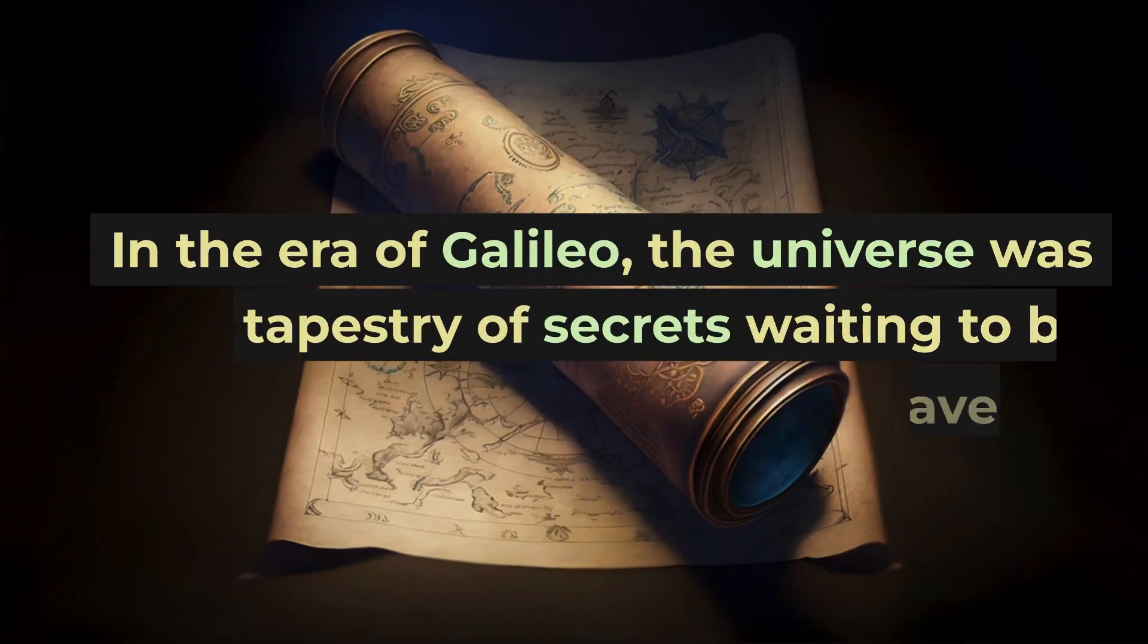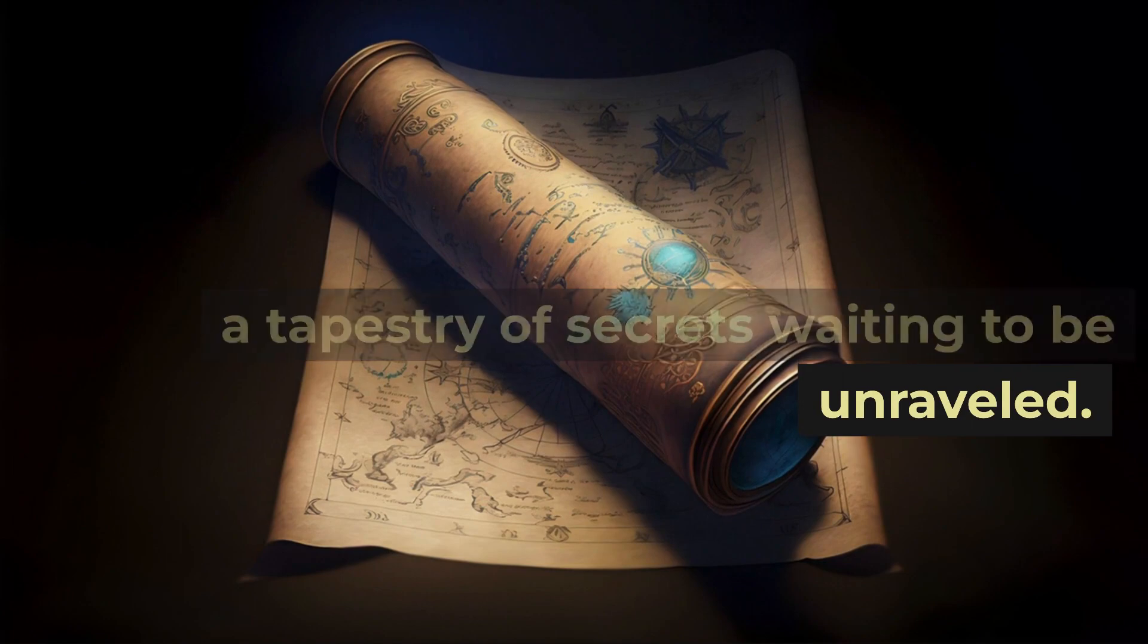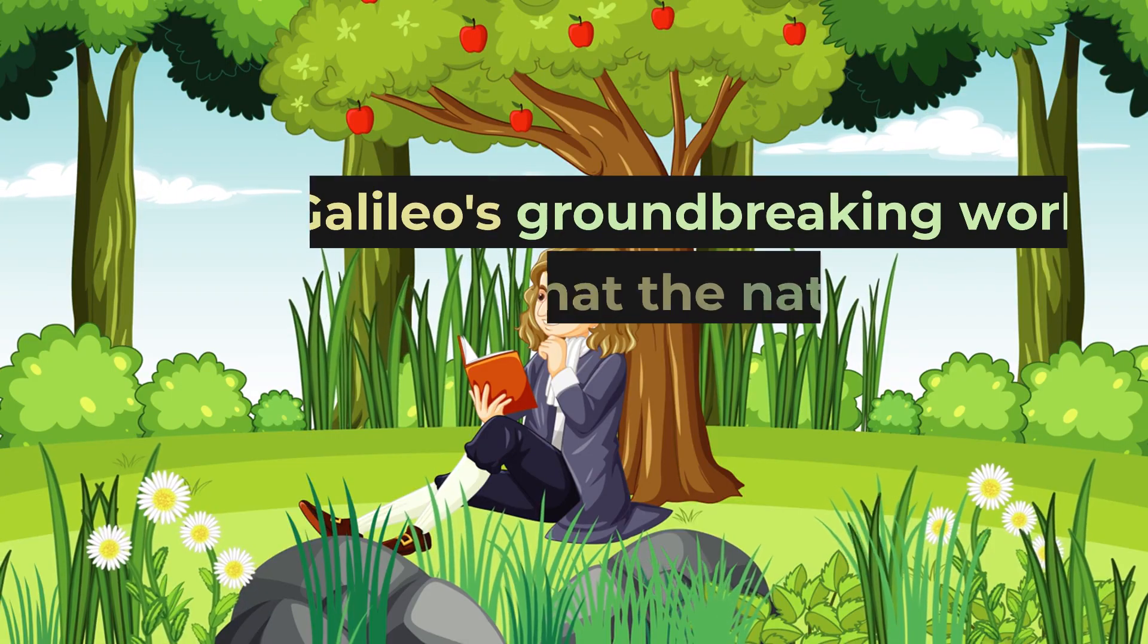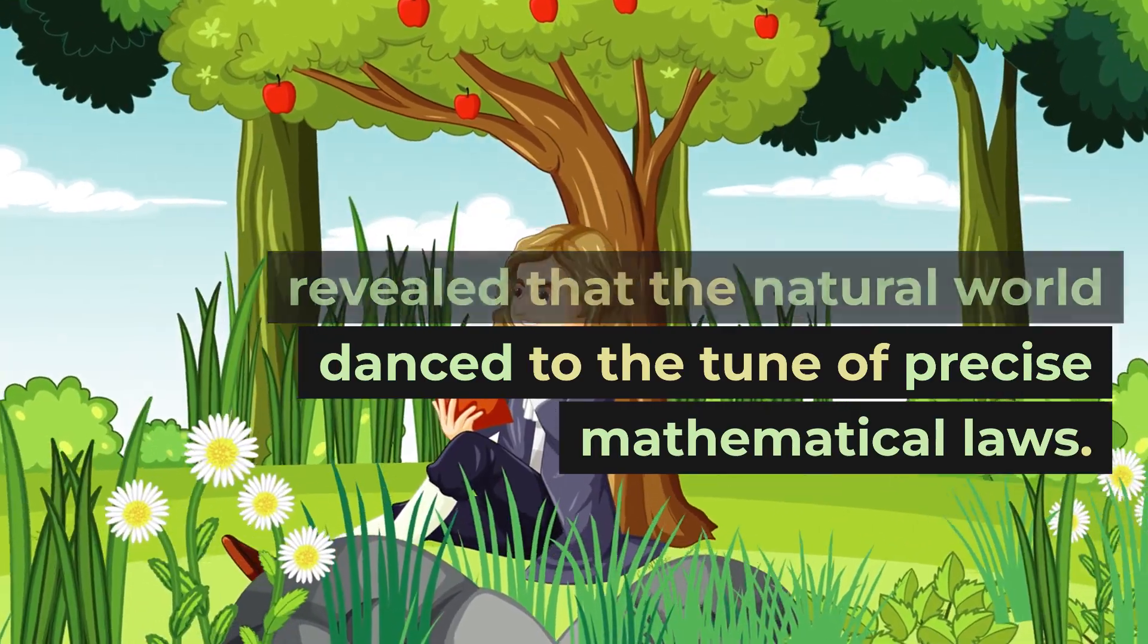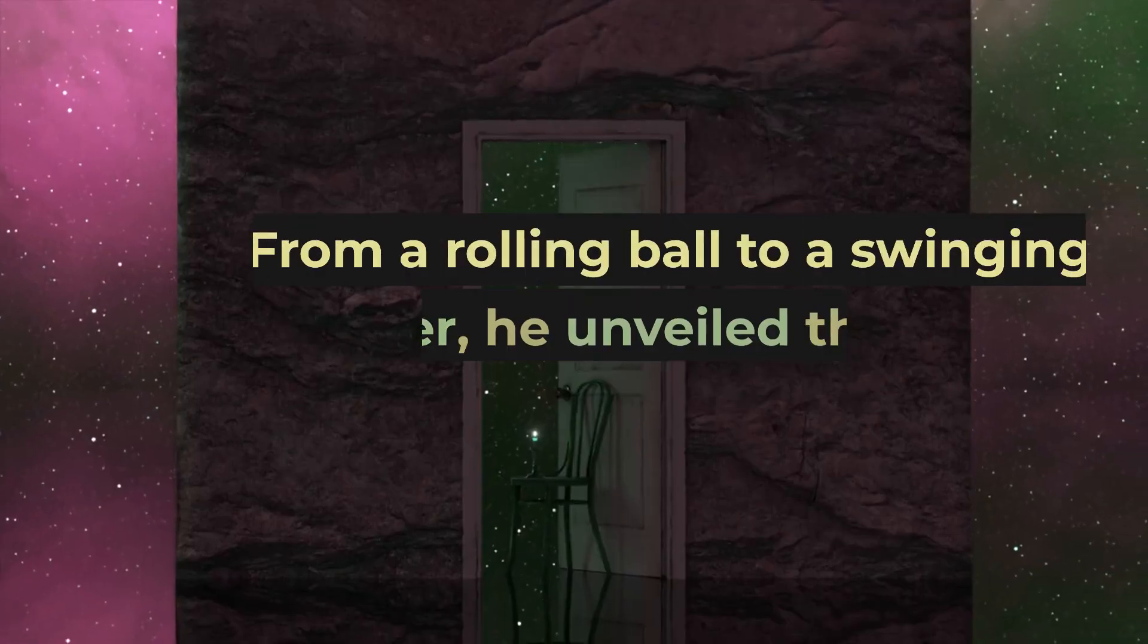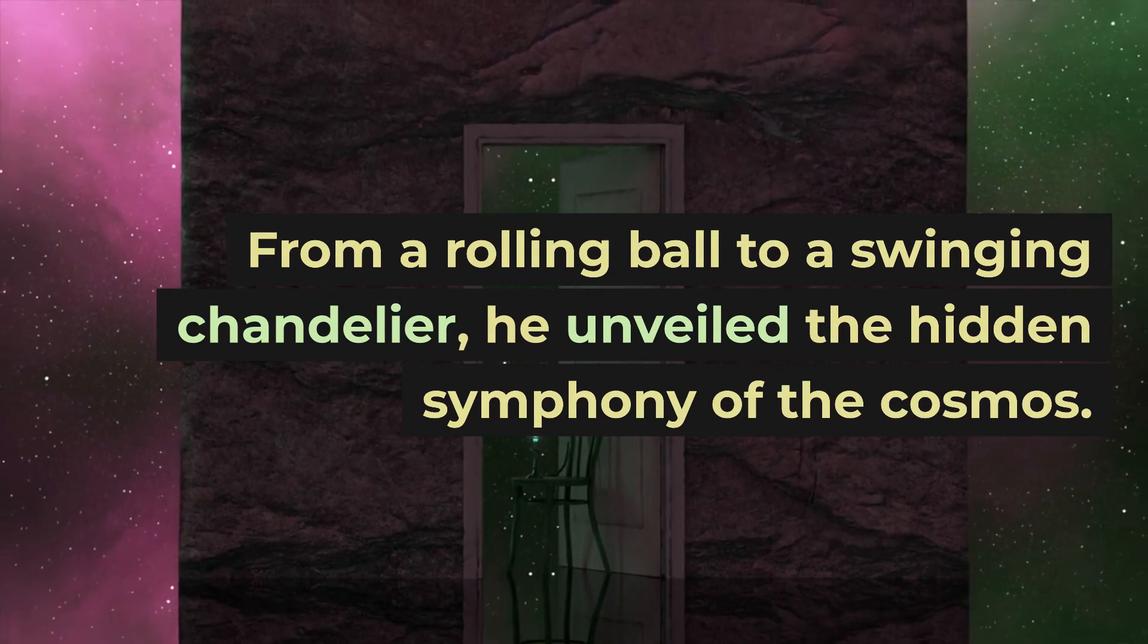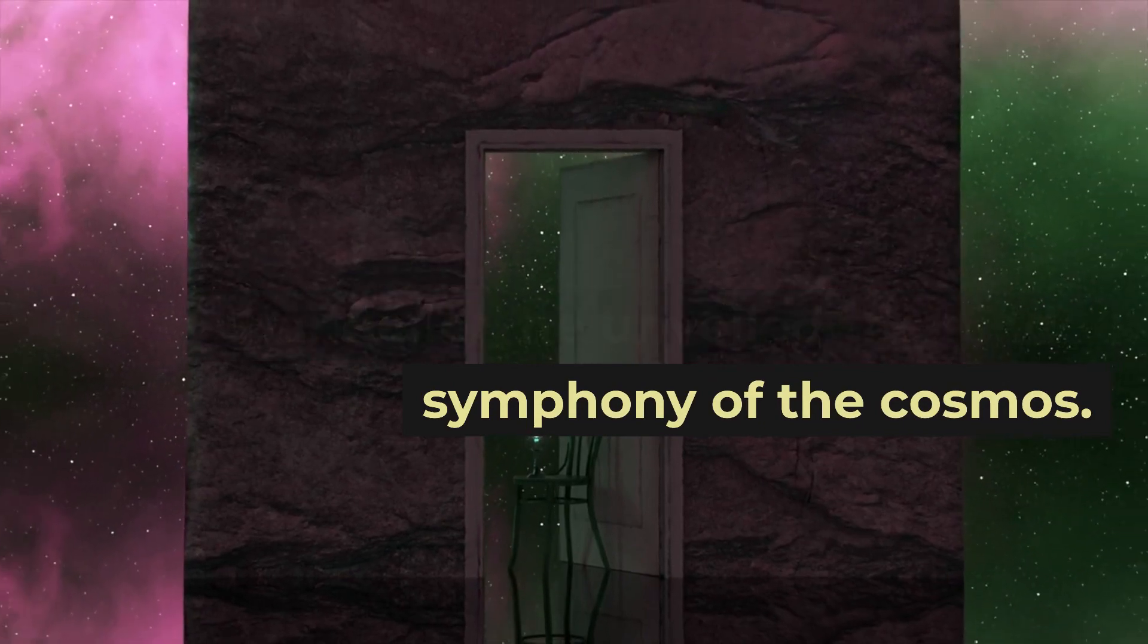In the era of Galileo, the universe was a tapestry of secrets waiting to be unraveled. Galileo's groundbreaking work revealed that the natural world danced to the tune of precise mathematical laws. From a rolling ball to a swinging chandelier, he unveiled the hidden symphony of the cosmos.